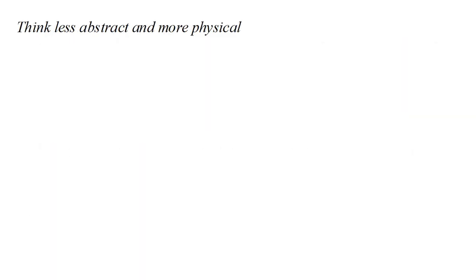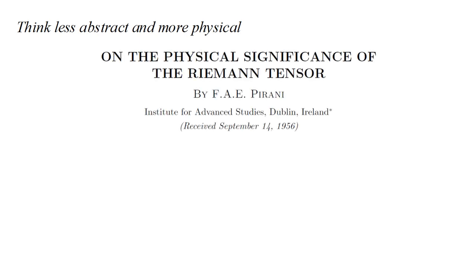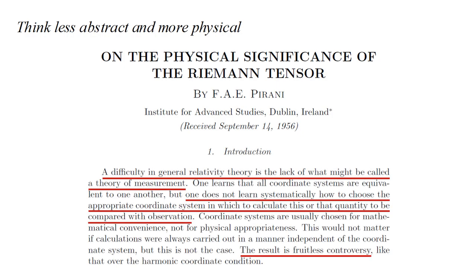In the 1950s, some physicists began to consider the problem from a less abstract and more physical point of view. A 1956 paper by Pirani, titled On the Physical Significance of the Riemann Tensor, was an important step in this direction. He wrote, a difficulty in general relativity theory is the lack of what might be called a theory of measurement. One does not learn systematically how to choose the appropriate coordinate system in which to calculate this or that quantity to be compared with observation. The result is fruitless controversy.